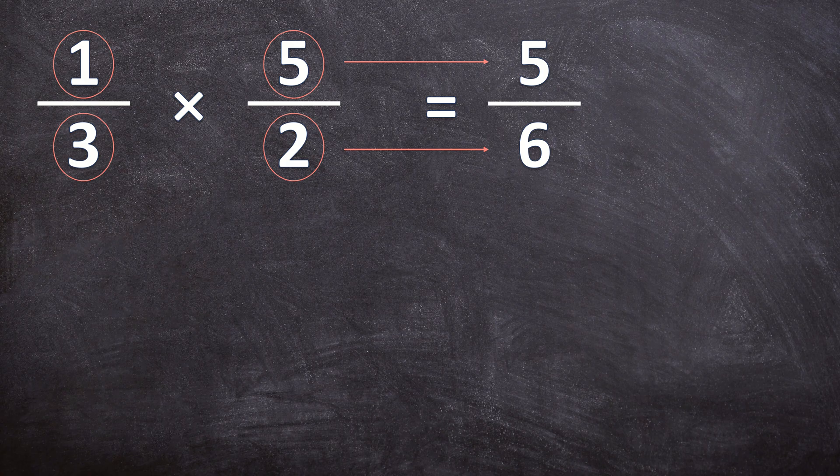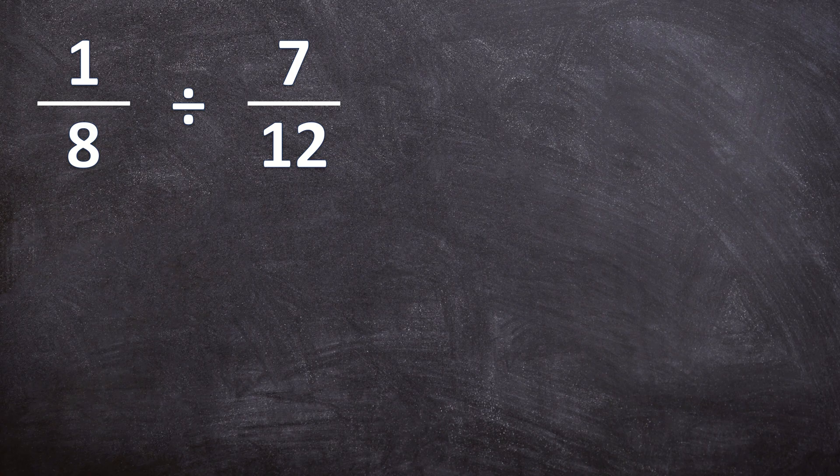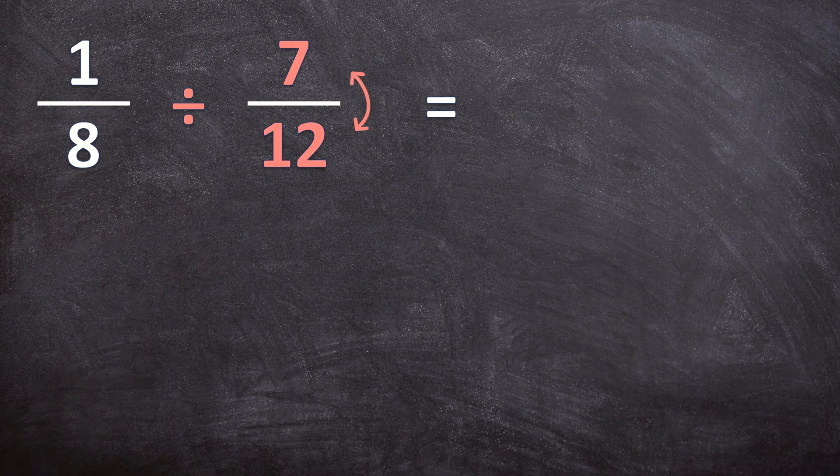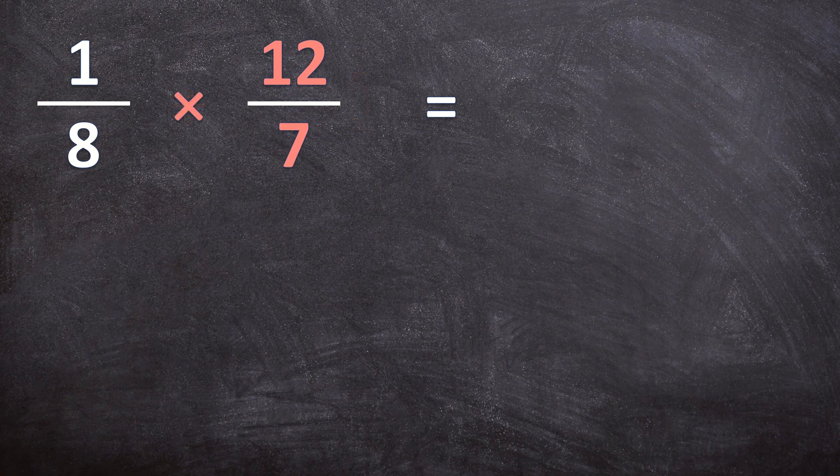So let's look at one more example. For this example, we have 1 over 8 divide by 7 over 12. And remember, the first thing we do is we're going to change the division into multiplication by swapping the 7 and the 12 around. And I want you to remember, we can only swap around the second fraction, not the fraction before the division sign, but only the fraction after the division sign. So let's do that. And now we only have to multiply these two fractions.